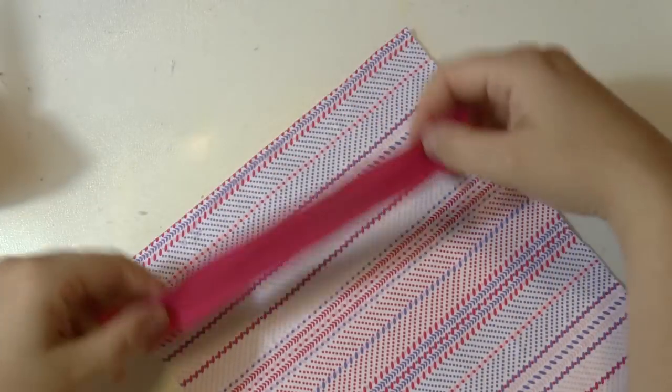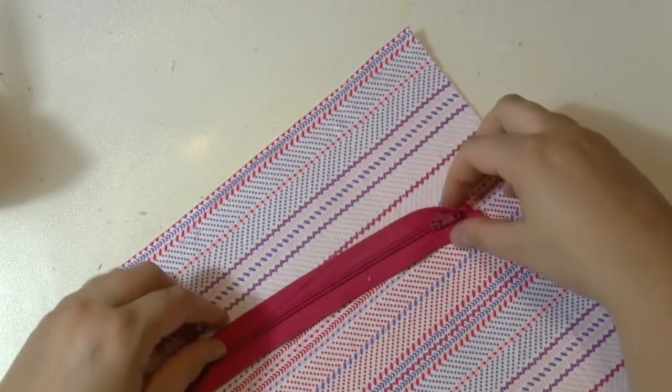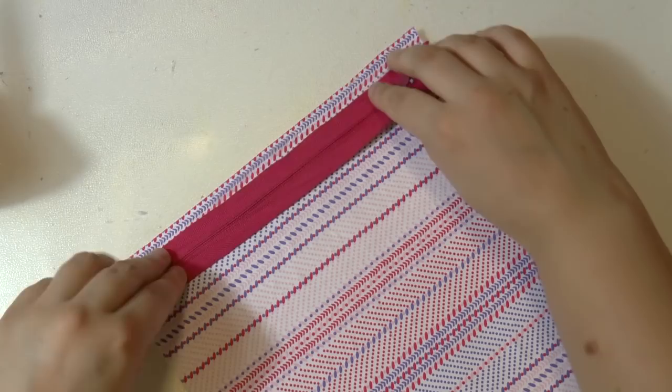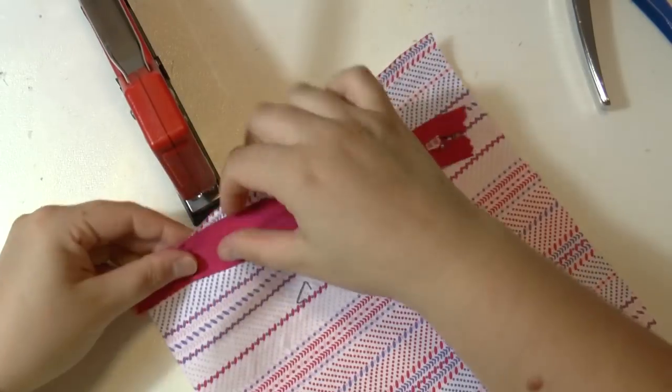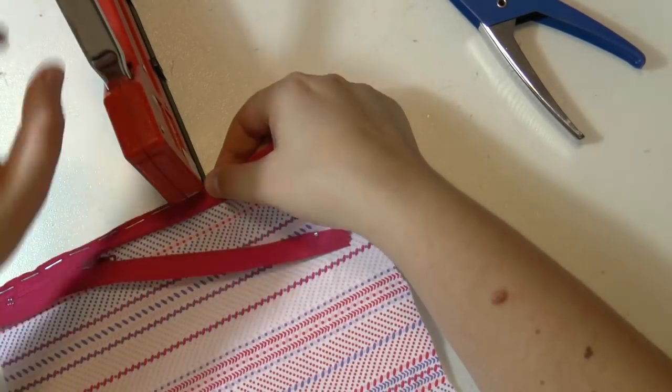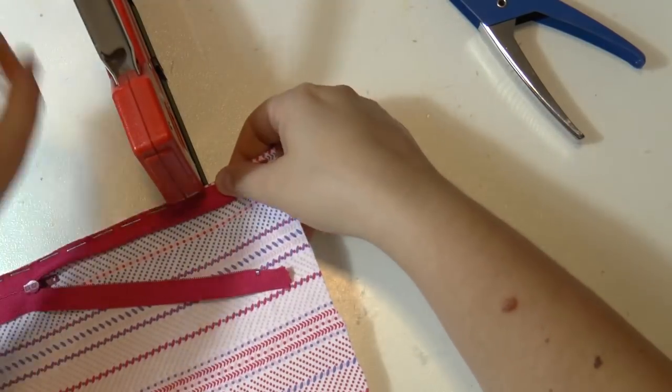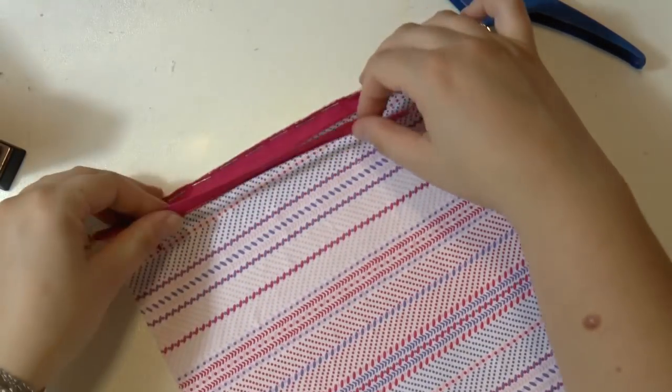And again you want to do the same things we did before. So take the zipper upside down and staple that first on one side. And then fold everything and staple the zipper on the other side.